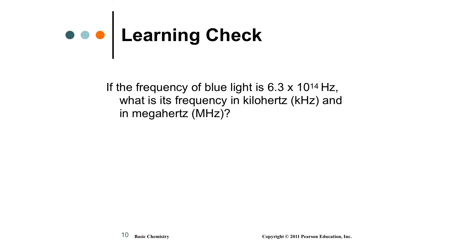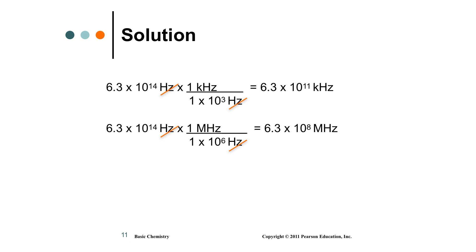Problem two: if the frequency of blue light is 6.3×10¹⁴ Hz, what is it in kilohertz? A kilohertz is a thousand Hertz, so your number must be a thousand times smaller — drop the exponent by three. So 6.3×10¹⁴ Hz becomes 6.3×10¹¹ kHz. If the unit gets a million times bigger, your number gets a million times smaller — same logic applies.